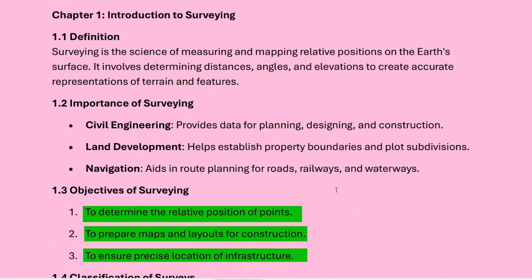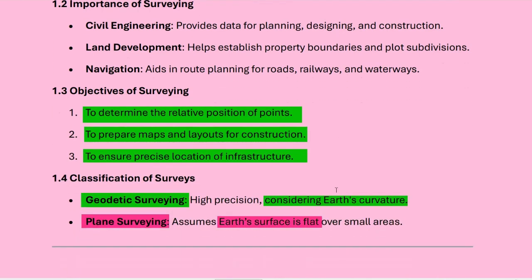The importance of surveying: in civil engineering, it provides data for planning, designing, and construction. In land development, it helps establish property boundaries and plot subdivisions. In navigation, it aids in route planning for roads, railways, and waterways. The main objective of surveying is to determine the relative position of points, prepare maps and layouts for construction, and ensure precise location of infrastructure.